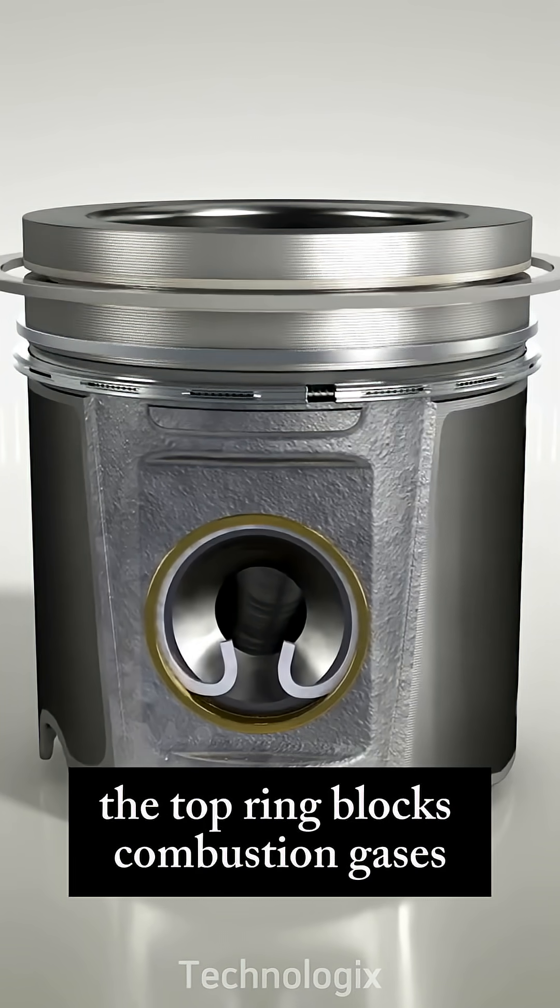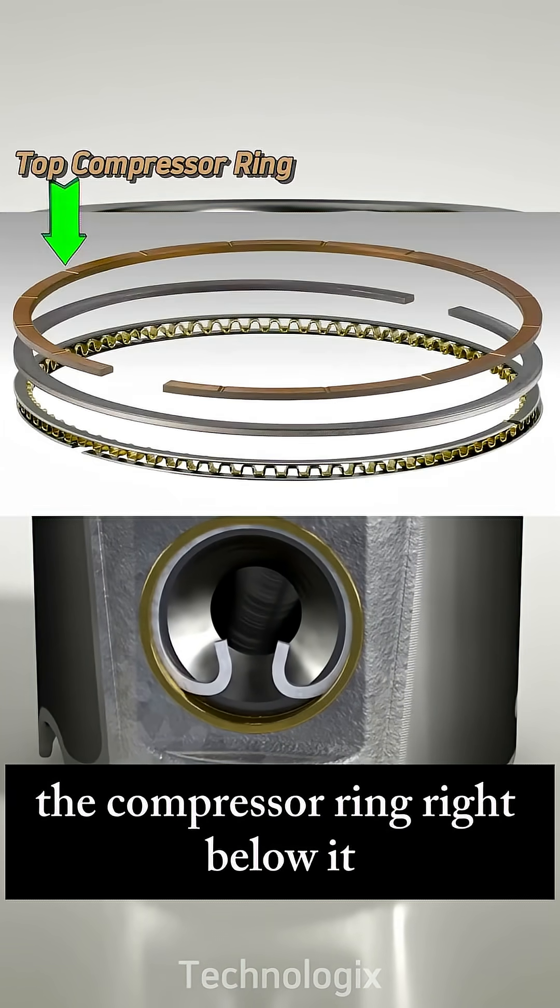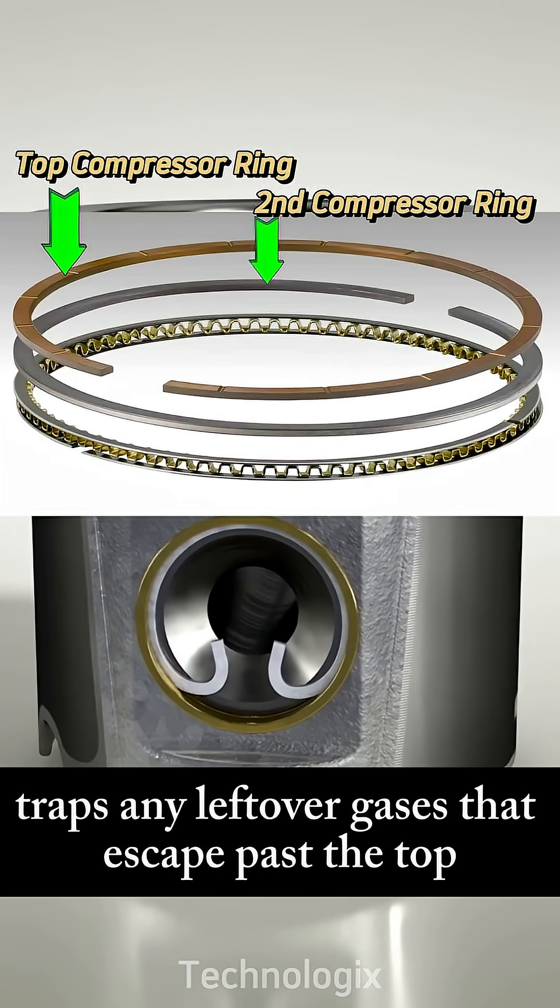The top ring blocks combustion gases. The compressor ring, right below it, traps any leftover gases that escape past the top.